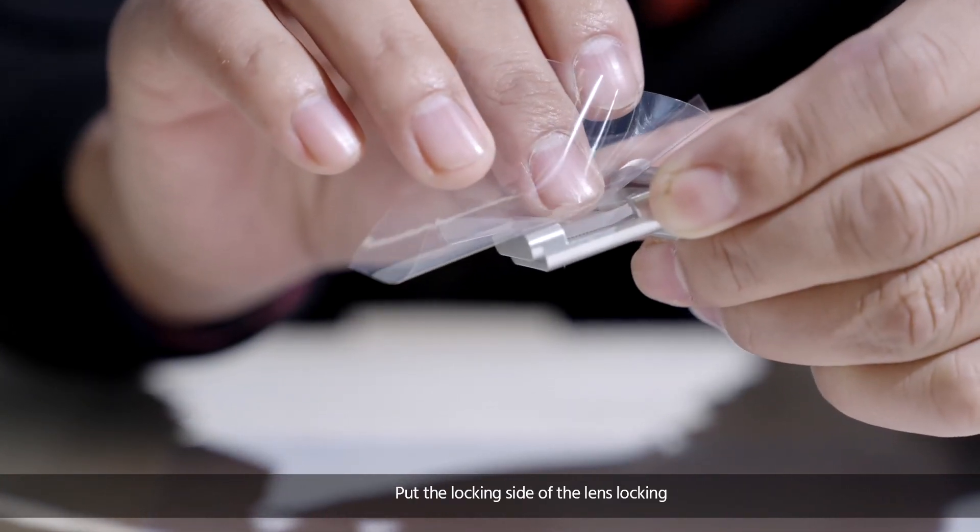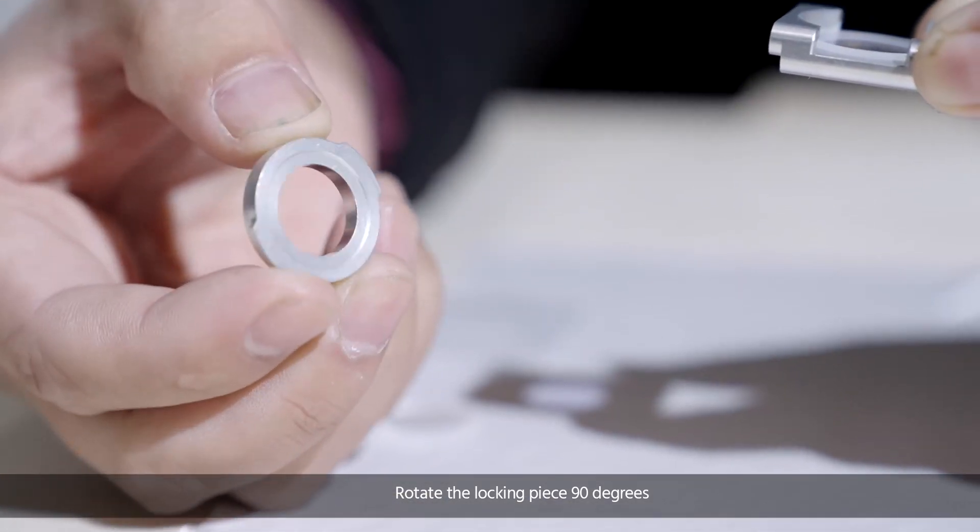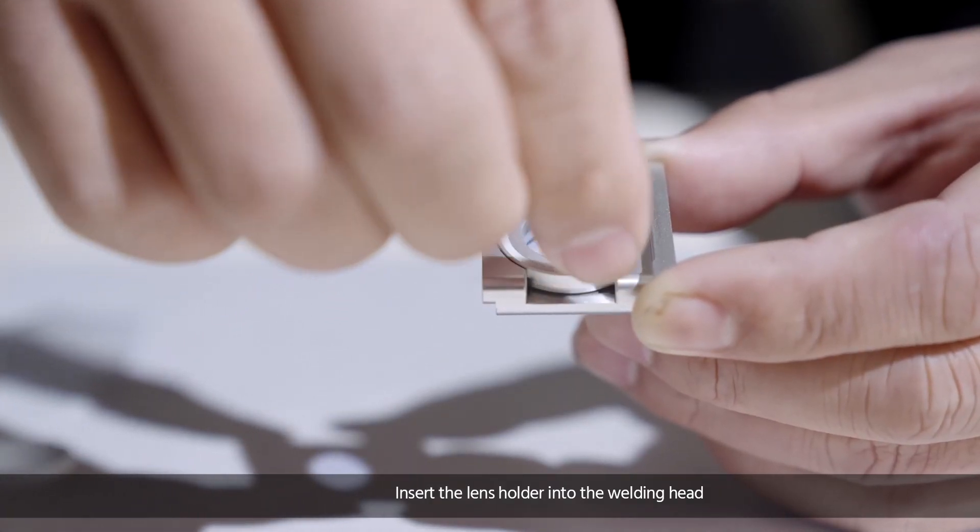Put the locking side of the lens locking piece down on the protective lens. Rotate the locking piece 90 degrees counterclockwise until it tightens the lens. Insert the lens holder into the welding head.